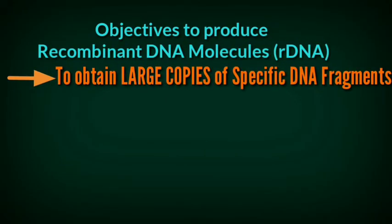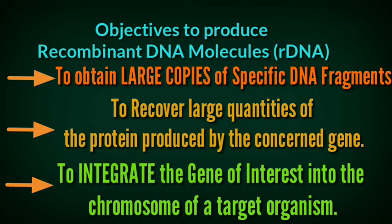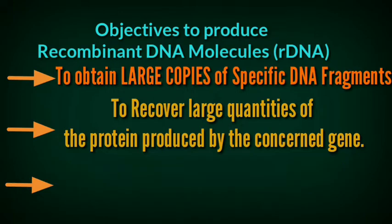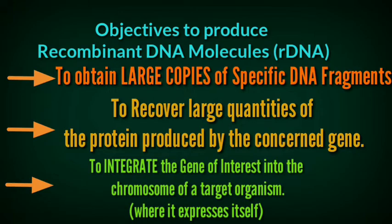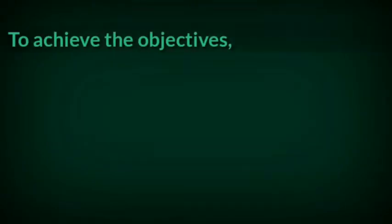Now let's study the objectives to produce recombinant DNA molecules. Number one, to obtain large copies of specific DNA fragments. Number two, to recover large quantities of the protein produced by the concerned gene. And number three, to integrate the gene of interest into the chromosome of a target organism where it expresses itself.